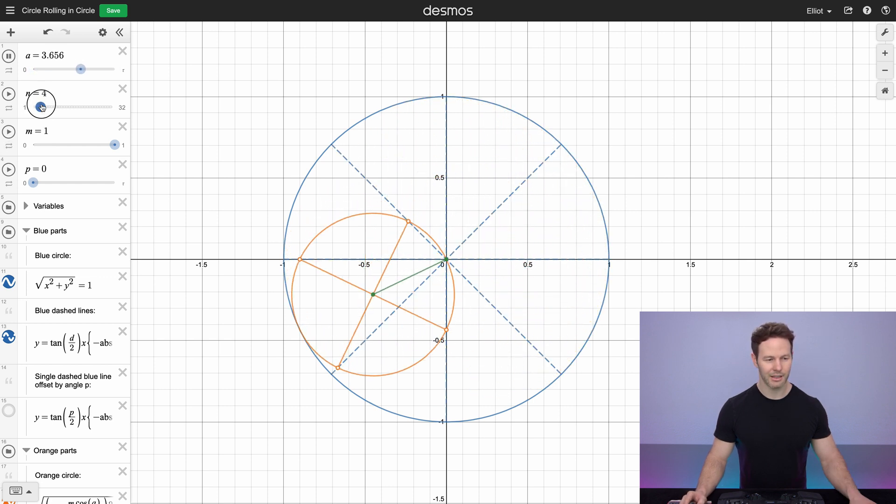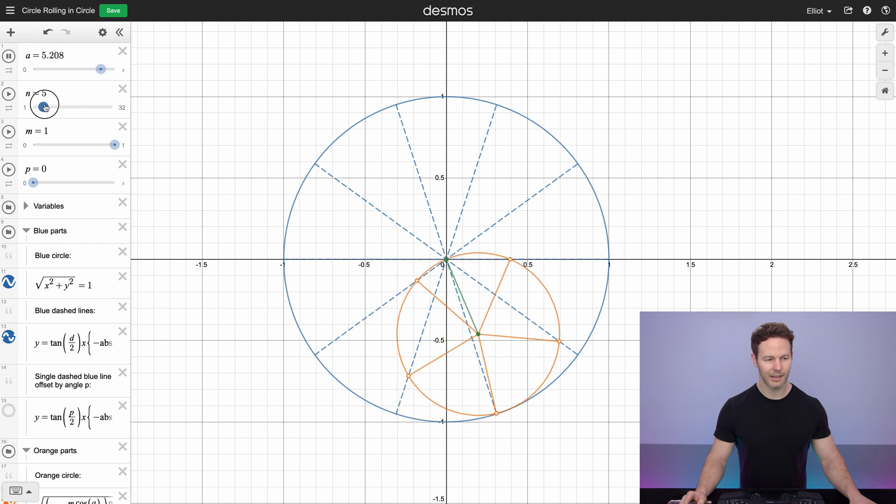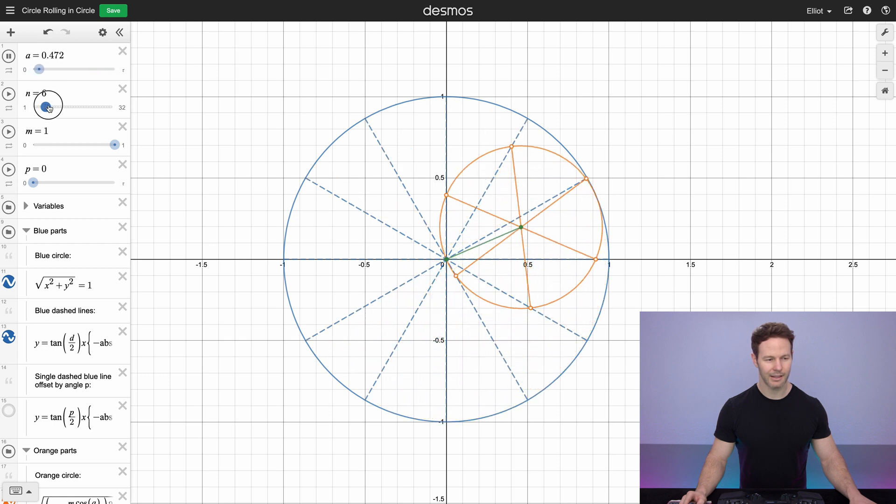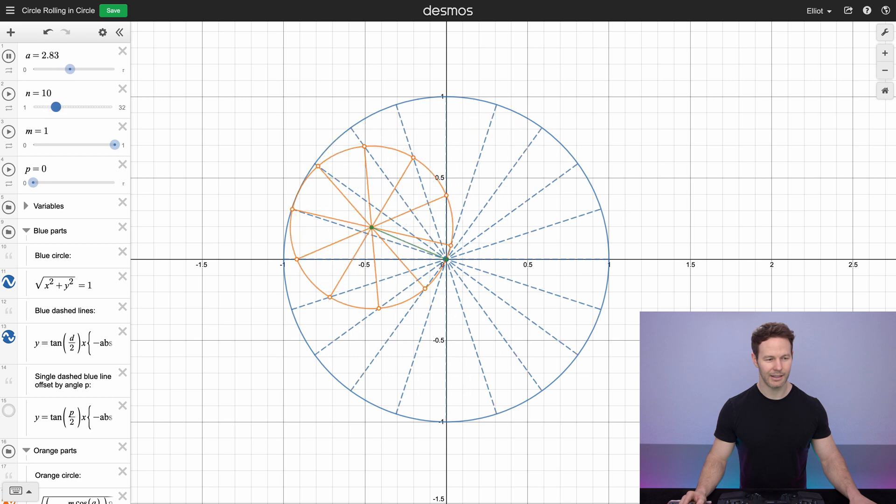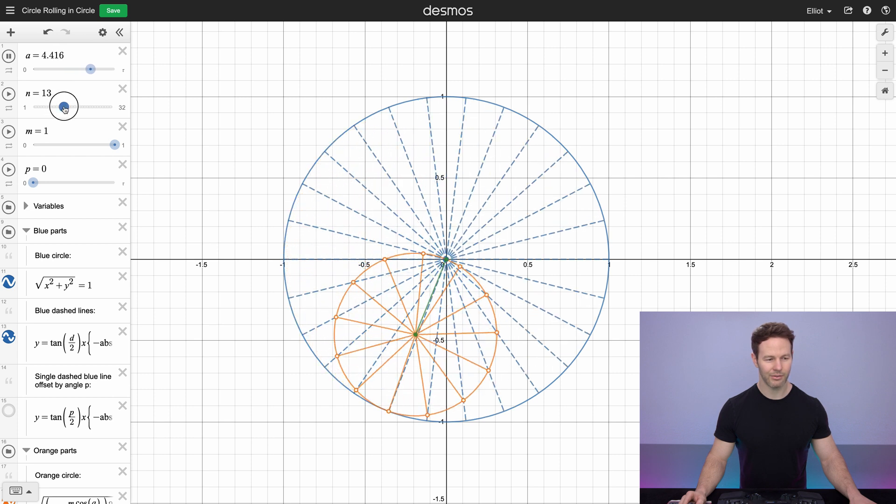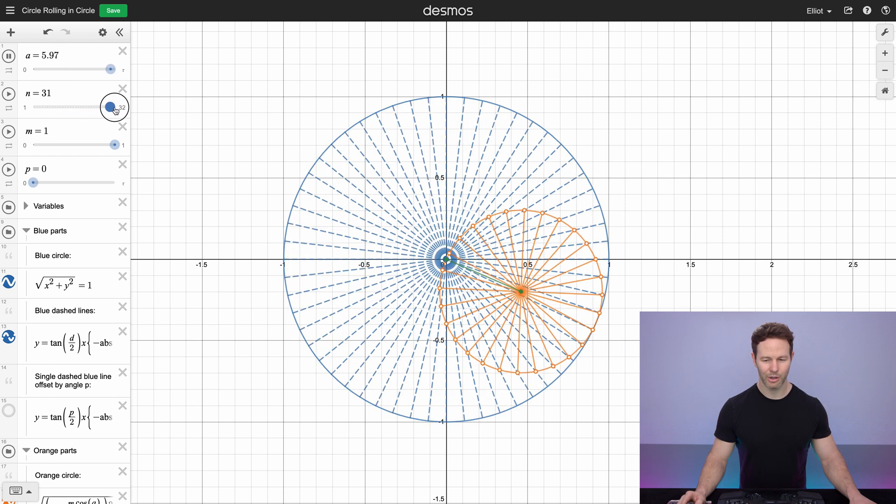So here's four dots, five dots, six dots, seven, eight, nine, ten, eleven, twelve, thirteen, fourteen, fifteen, all the way up to thirty-two.